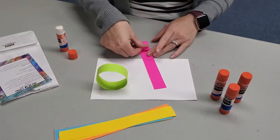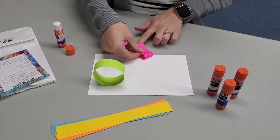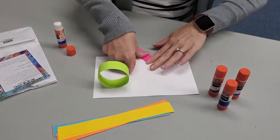You can also make a zig-zag by flipping your paper back and forth.